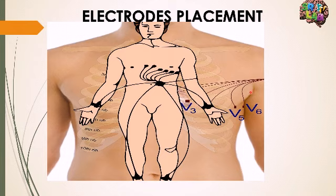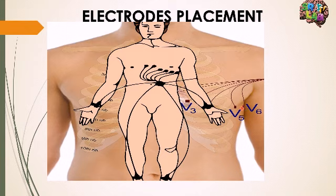On this diagram you can see the placement clearly. V5 is at the anterior axillary line — at the lateral edge of the pectoralis major muscle. V6 is at the mid-axillary line, just in the middle of the axilla. We will see what V stands for shortly.